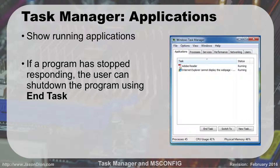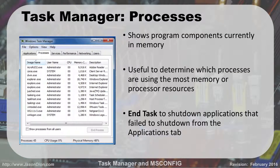The second tab is Processes, which shows you all the program components currently running in memory. When you think of Adobe Acrobat, you may have Adobe Acrobat Reader 32 as the actual program, but in addition there are all these other programs running in the background. If you had two tabs open in Internet Explorer, you'd see two Internet Explorer entries here. Explorer, which is the file system browser, may also show up. From here you can determine what processes are using the most memory and CPU.